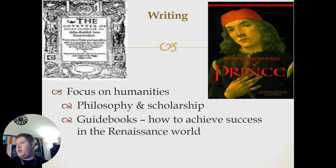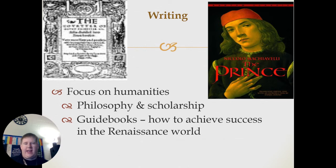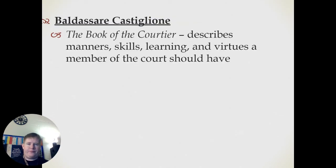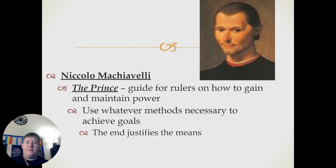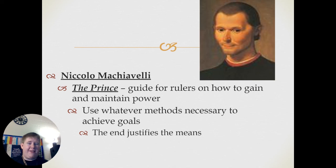When it comes to writing, we also have to talk about a focus on humanities. It was based in philosophy and scholarship, and a lot of these early books were considered guidebooks — essentially like 'how to be successful for dummies' in the Renaissance world. One of the most famous is Niccolò Machiavelli's The Prince, which you'll be reading an excerpt of as your assignment today. We also have Baldassare Castiglione and the Book of the Courtier, which describes the manners, skills, learning, and virtues a member of the court should have. Machiavelli's The Prince was a guide for rulers on how to gain and maintain power — he advocated for using whatever methods were necessary, essentially saying the ends justified the means.